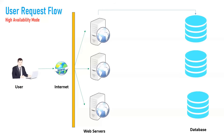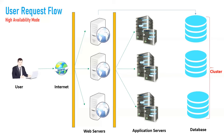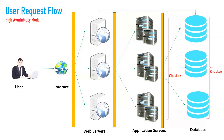Similarly, for high availability you have multiple database instances — maybe three — because if your single database crashes, your application cannot contact it for data. So you have multiple database instances in the back end, and the web server can contact any database instance to save or retrieve data; all database instances can be in a single cluster. Likewise, your web server can contact multiple application servers in the back end for execution of business logic, and each application server can contact any database node.